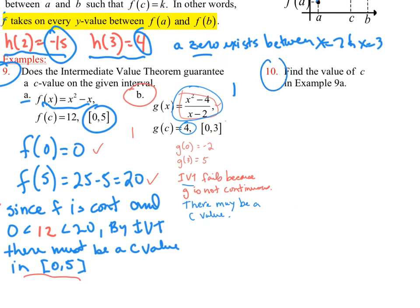Number 10. Now it says find the value of c. To do this, it's very easy. See, all you do is take the function x squared minus x and set it equal to that y value that I'm looking for. So I'm looking at a over here. x squared minus x is equal to 12. I want to know where that happens. I'm guaranteed it by the Intermediate Value Theorem. So now I just go ahead and solve it.